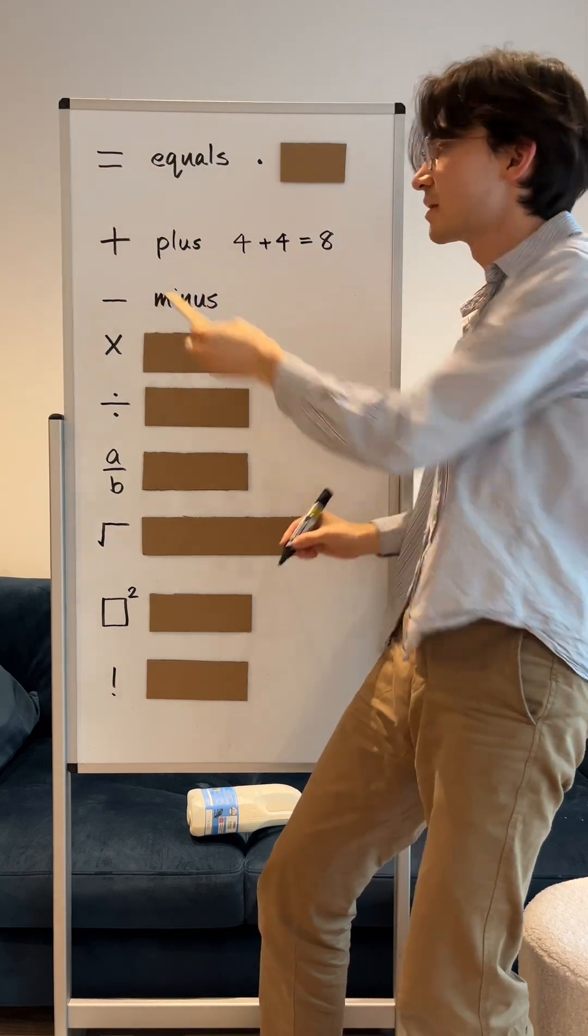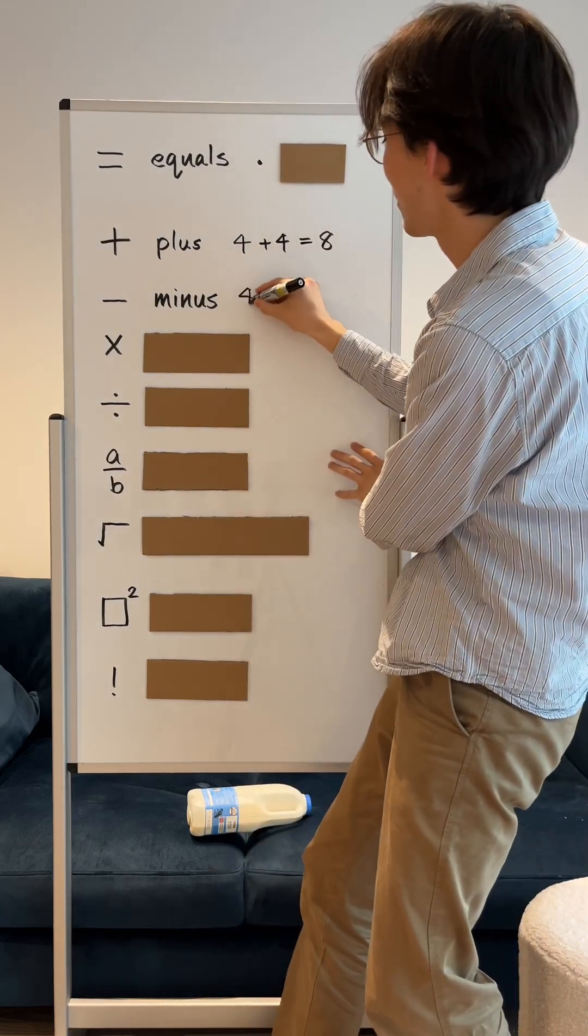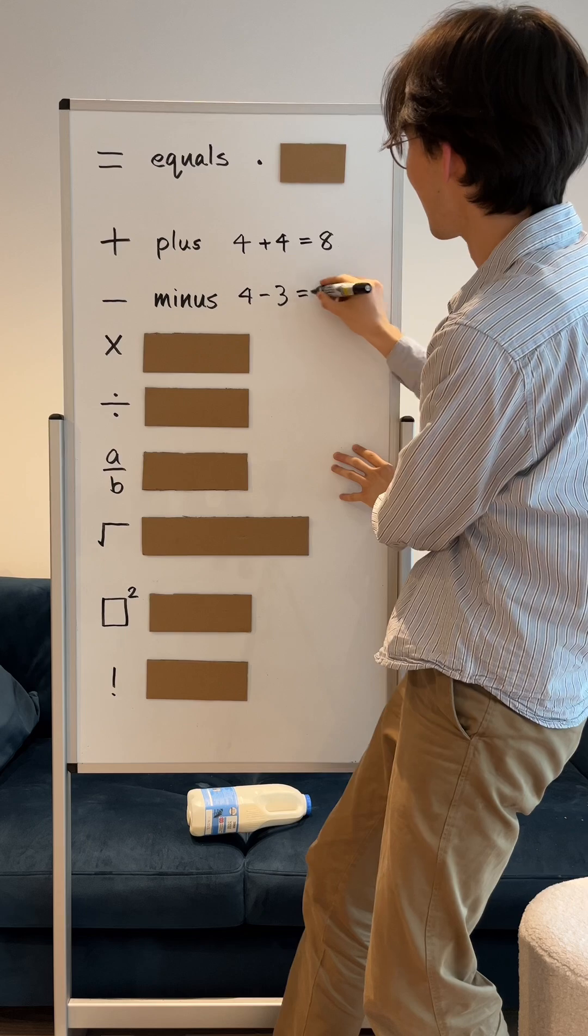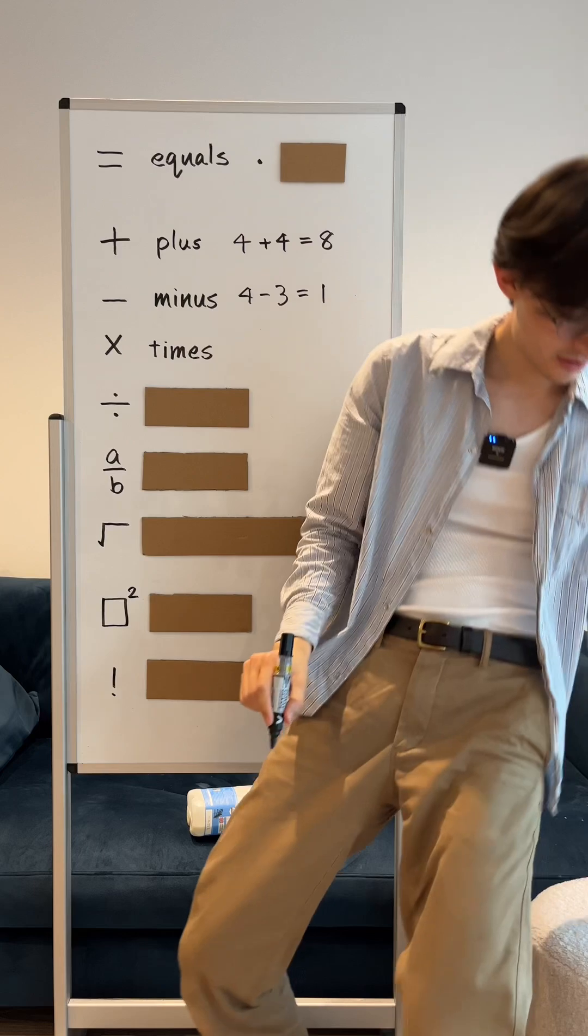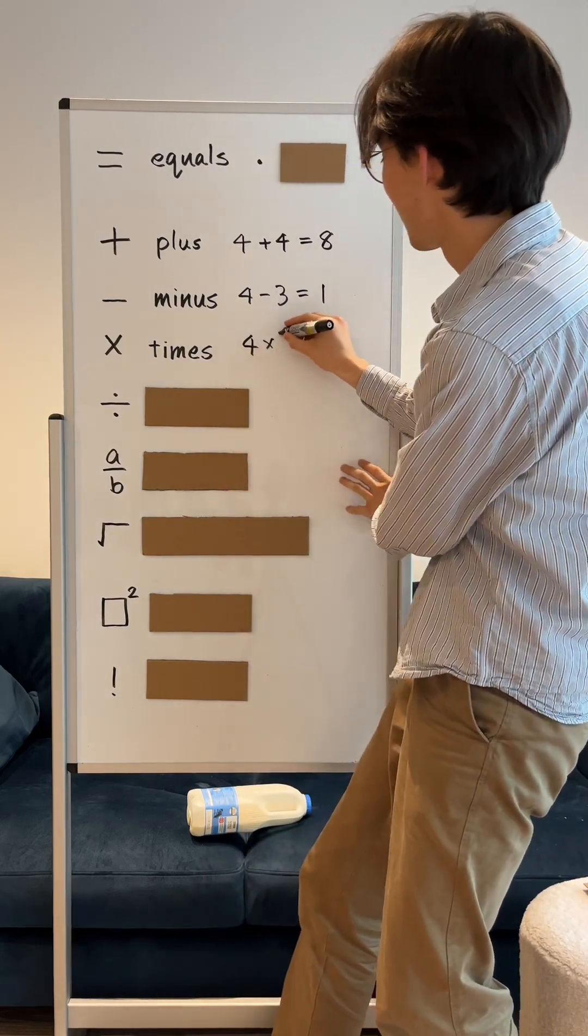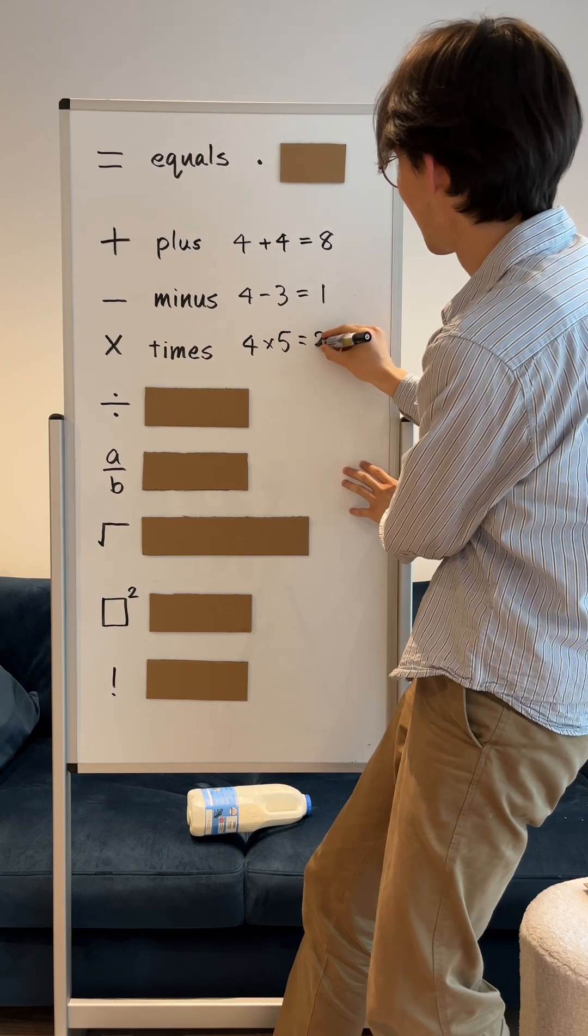This minus. So 4 minus 3 equals 1. This times. So 4 times 5 equals 20.